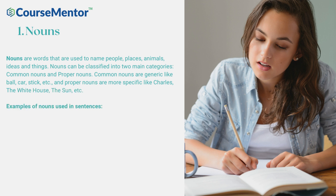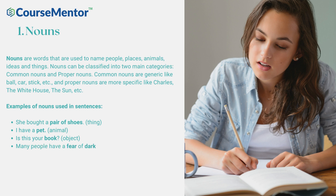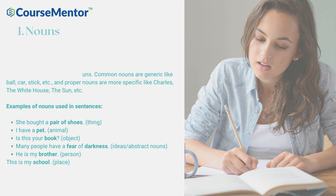Examples of nouns used in sentences: She bought a pair of shoes. (Thing) I have a pet. (Animal) Is this your book? (Object) Many people have a fear of darkness. (Ideas/Abstract nouns) He is my brother. (Person) This is my school. (Place)